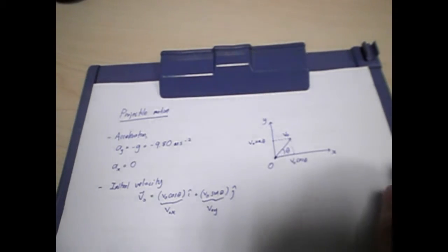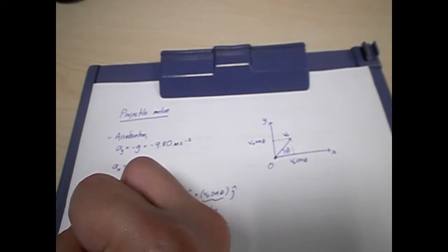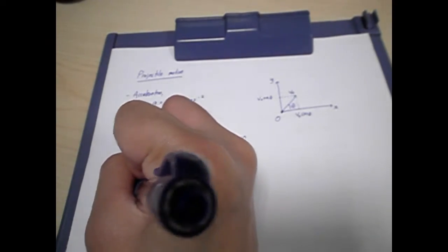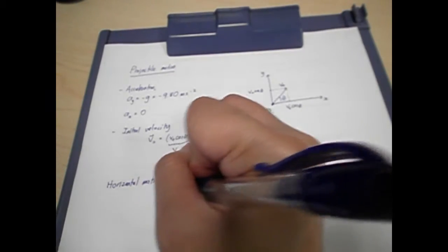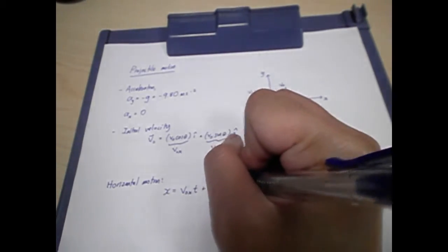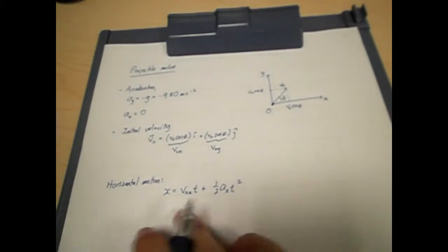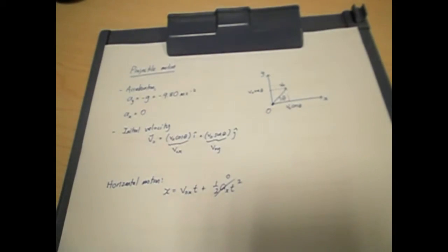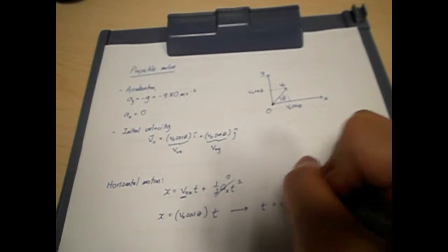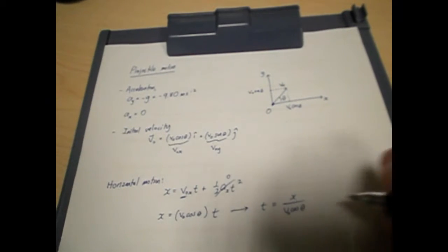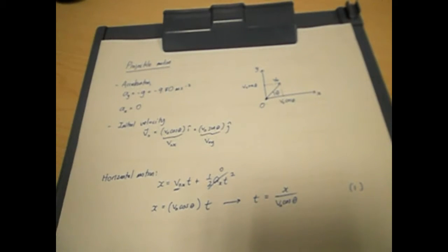To analyze the projectile motion, we split into horizontal and vertical components and analyze them separately. For the horizontal motion, we have zero acceleration. We begin with the kinematic equation: x = V0x·t + ½·Ax·t². Since acceleration in the x-direction is zero and the initial horizontal velocity is V cos theta, we get x = V cos theta · t. We can then express t as x divided by V cos theta. This is our first equation from analyzing the horizontal motion.